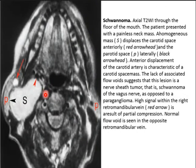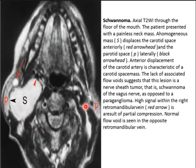Schwannoma is another carotid space tumor. It also enhances avidly because it is a vascular tumor; however, unlike paraganglioma, it enhances homogeneously with no salt-and-pepper appearance.